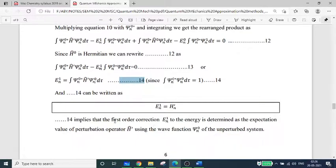Equation 14 implies that the first order correction to energy en1 is determined as the expectation value of perturbation operator h prime using the wave function psi n0 of the unperturbed system.